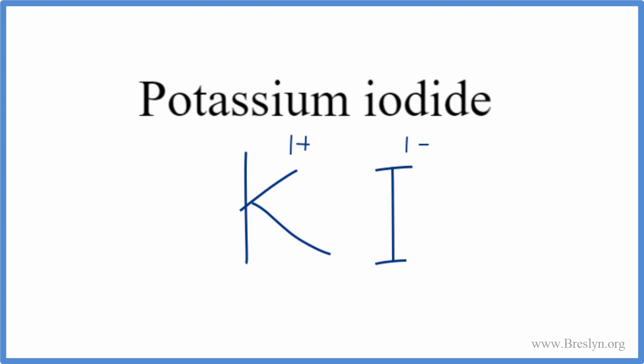So KI is the correct formula for potassium iodide. Let's get rid of the charges, and there you have it, KI, the formula for potassium iodide. This is Dr. B, and thanks for watching.